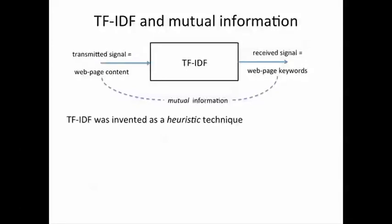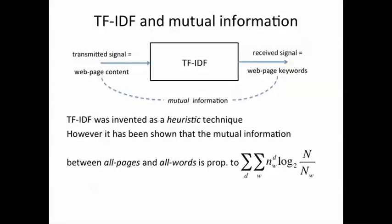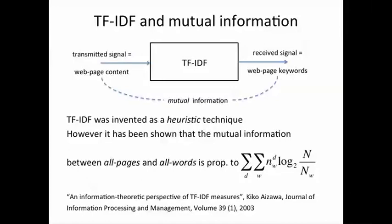TF-IDF was actually invented as an intuitive or heuristic technique, but it's been shown recently that the mutual information between all pages in a collection and all the words in the collection is actually proportional to this sum, which is essentially the individual TF-IDFs of each word summed up over all the documents. So if you take every word in the collection, compute its TF-IDF, and add that up across all documents and all words, you'll get the mutual information between all words and all pages. This is certainly very interesting because it puts this fairly intuitive heuristic technique on a firm mathematical footing.